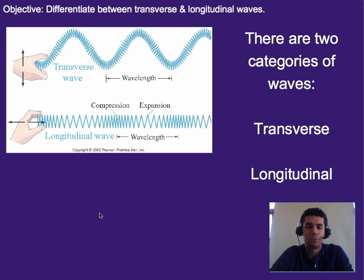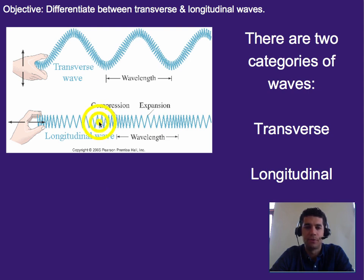This is oversimplifying it a little bit, but there are two general categories of waves, and most waves can be broken down into one or the other of these. There are some exceptions and some more complicated waveforms, but for the most part, what we're going to be studying are transverse and longitudinal waves. You can see an example of them right here.